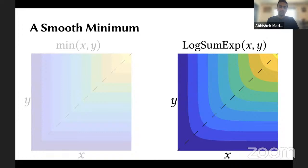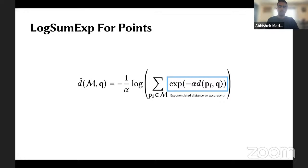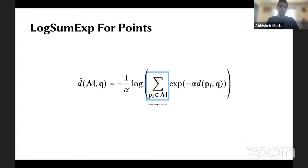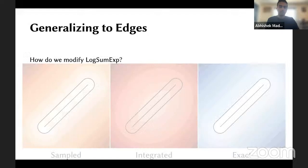Applying this to distances, we get a formula where we take exponentiated distances between our points with some accuracy parameter alpha, sum over our entire mesh, then take a logarithm and scale. This way we essentially have a minimum distance measure that's been smoothed out. But while that works for points, it's not clear how to extend this to edges and triangles, so we need to modify the formulation.